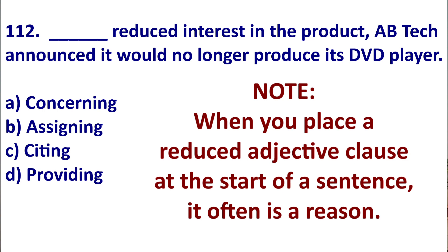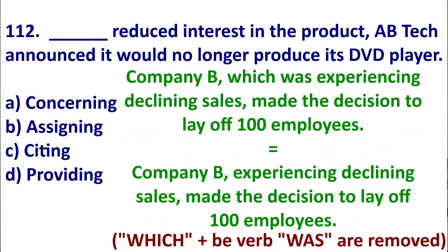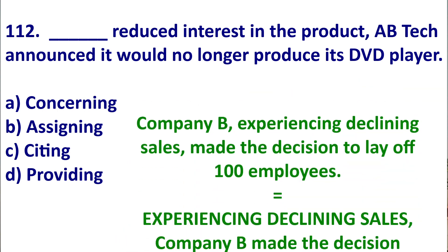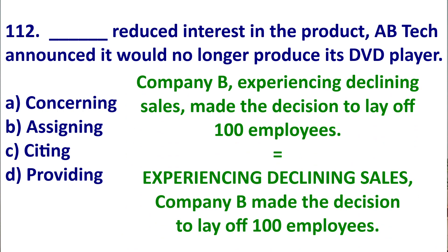Let's look at another example. The original sentence: 'Company B, which was experiencing declining sales, made the decision to lay off a thousand employees.' The adjective clause is 'which was experiencing declining sales.' Reduced, it becomes: 'Company B, experiencing declining sales, made the decision to lay off a thousand employees.' Notice the subject 'which' has been removed, the verb 'was' has been removed, and we just have the -ING form. We can put this at the start and say: 'Experiencing declining sales, Company B made the decision to lay off a thousand employees.'